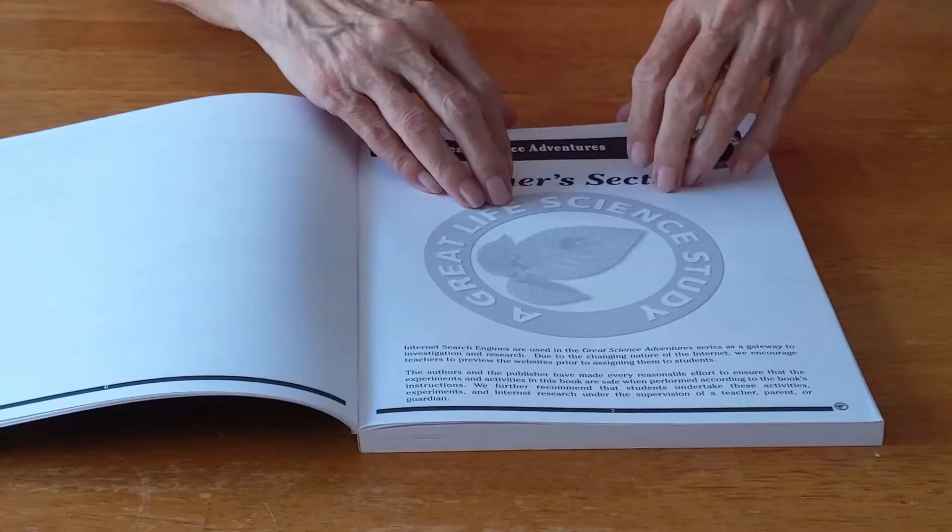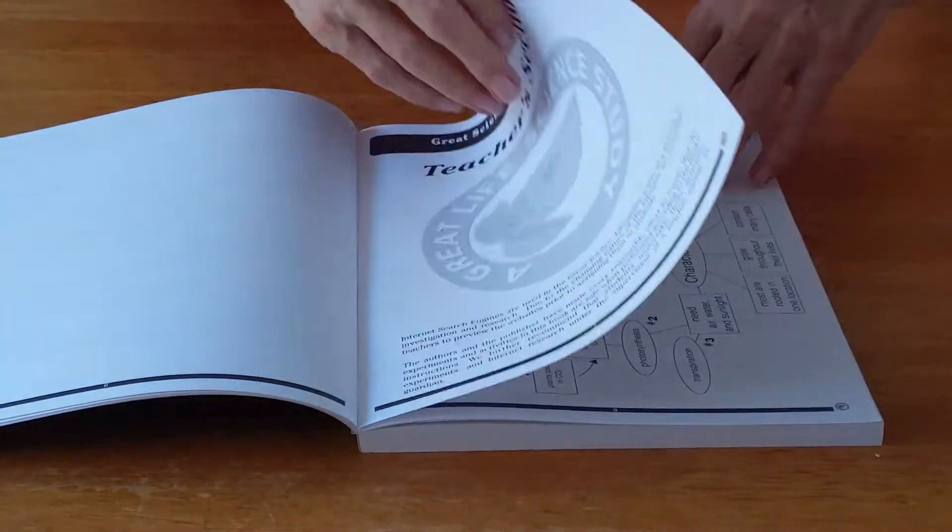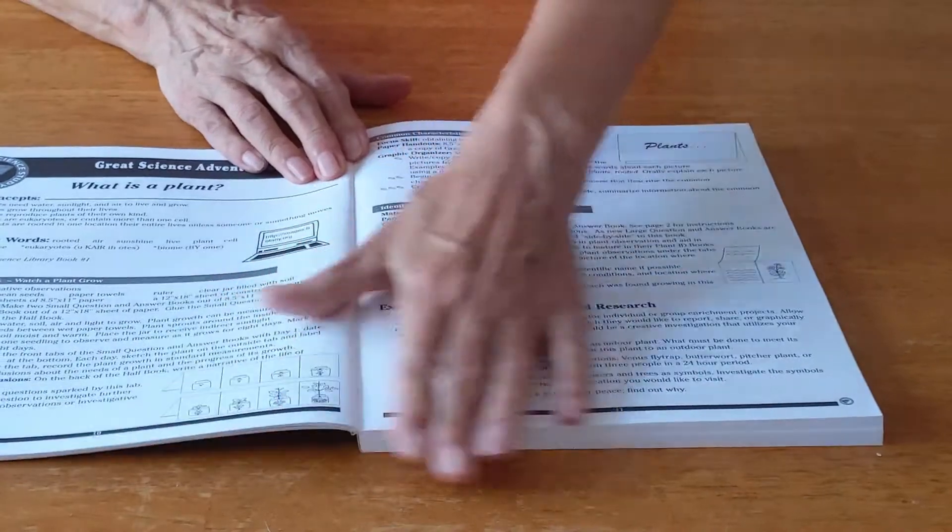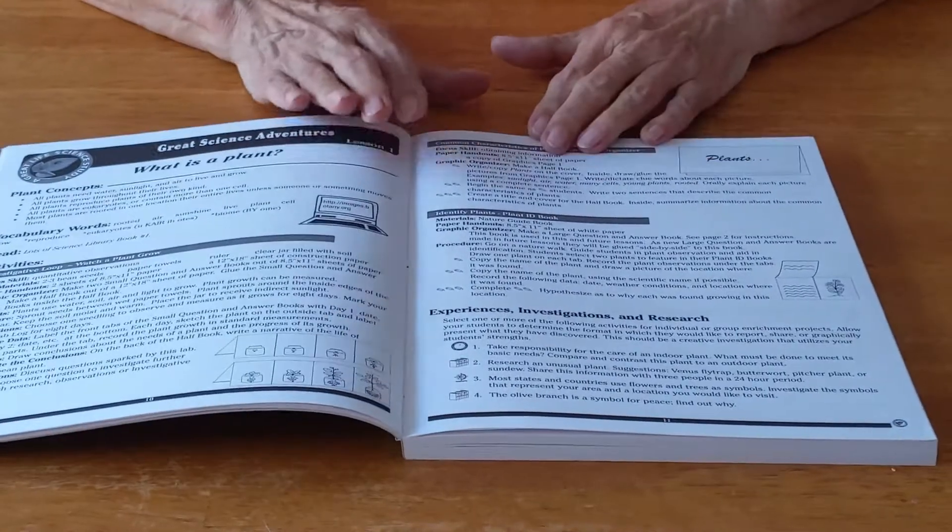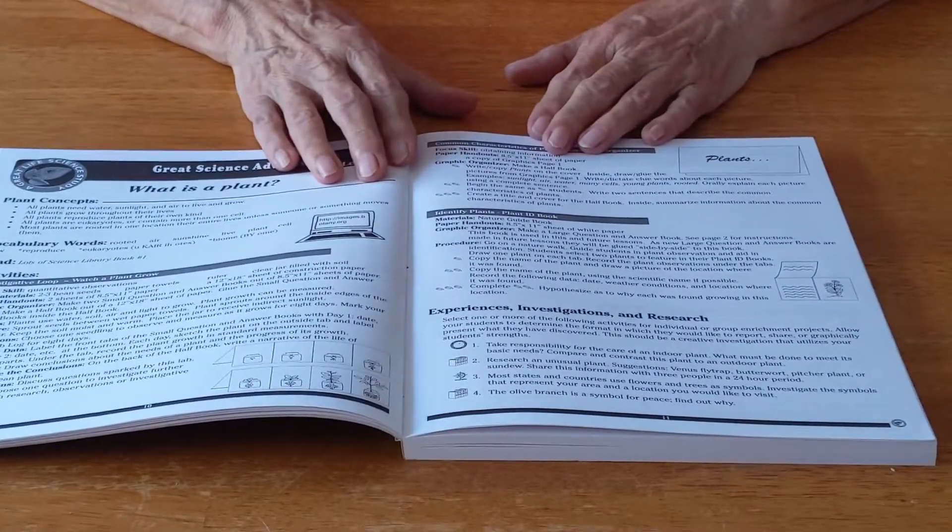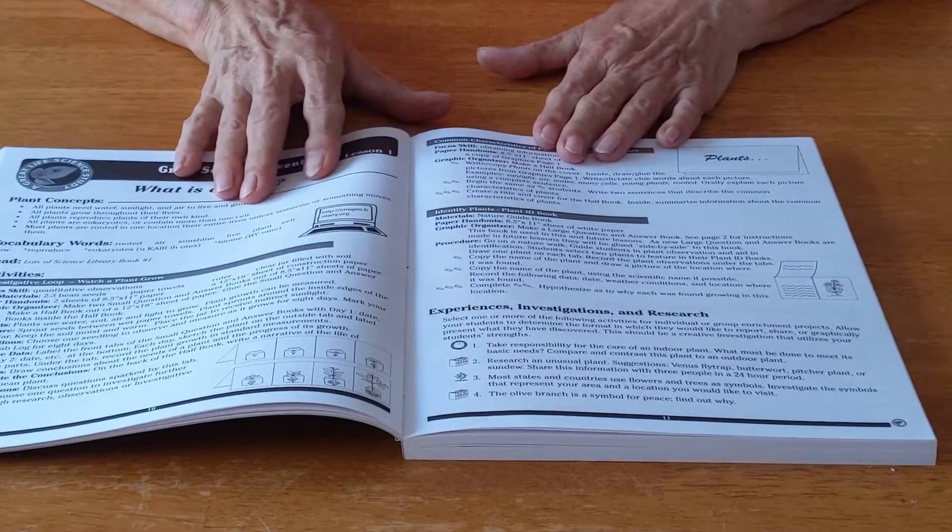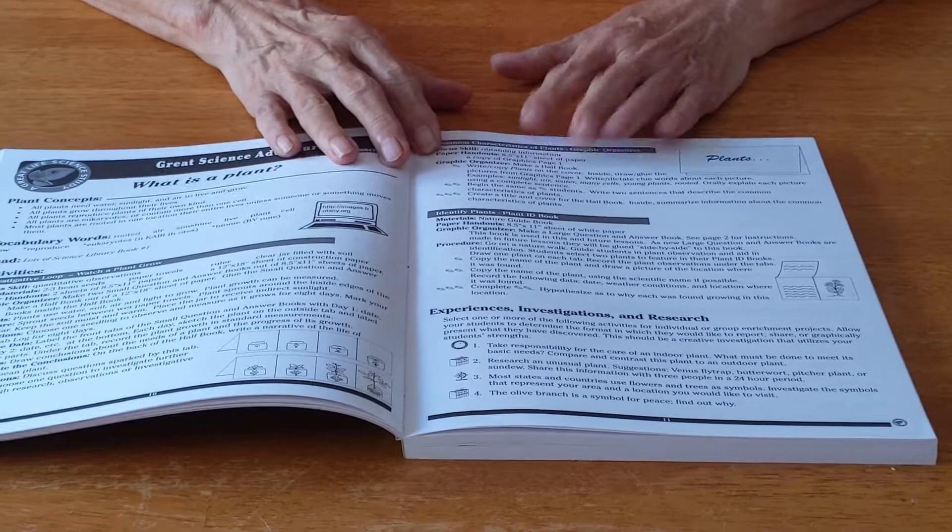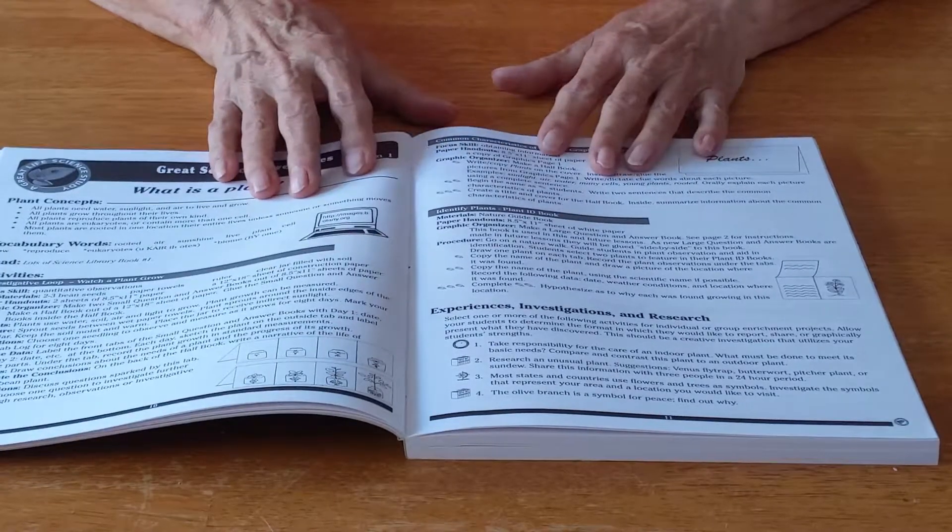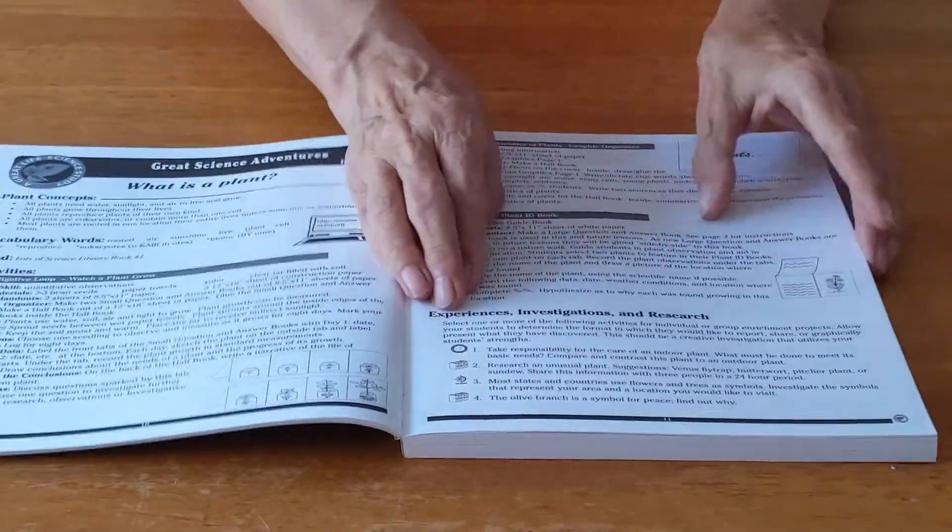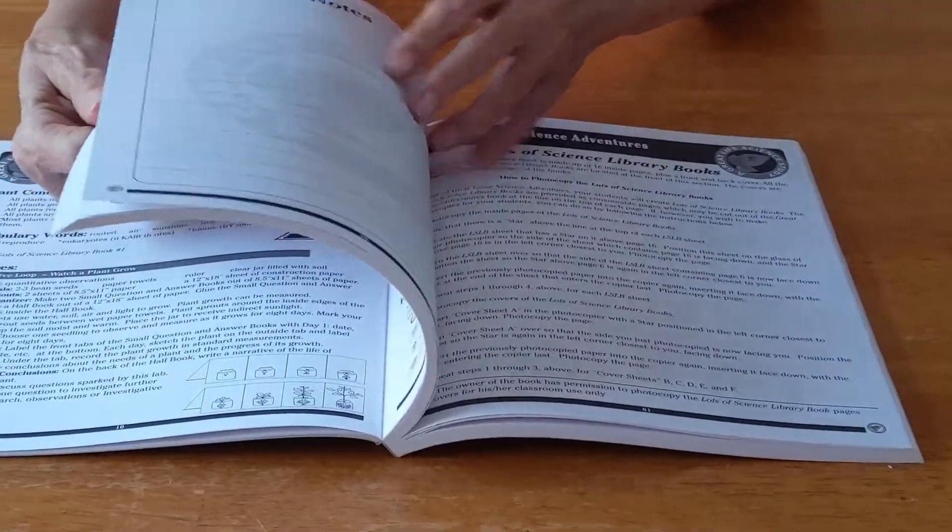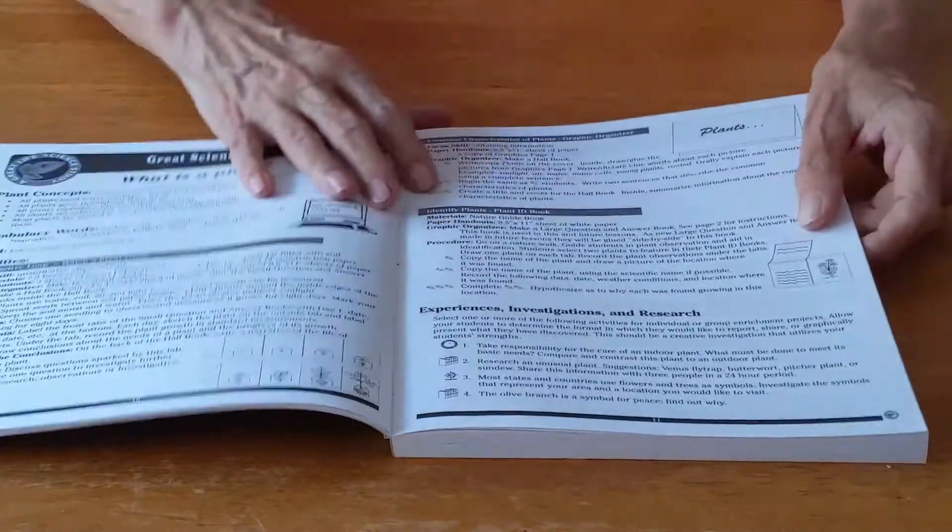Now we are entering the teacher section. The teacher section is written in 24 lessons. Every one of these books has the exact same format, so if you learn how to use one you know how to use all of them. The rest of the book is divided into the teacher section and the student section.